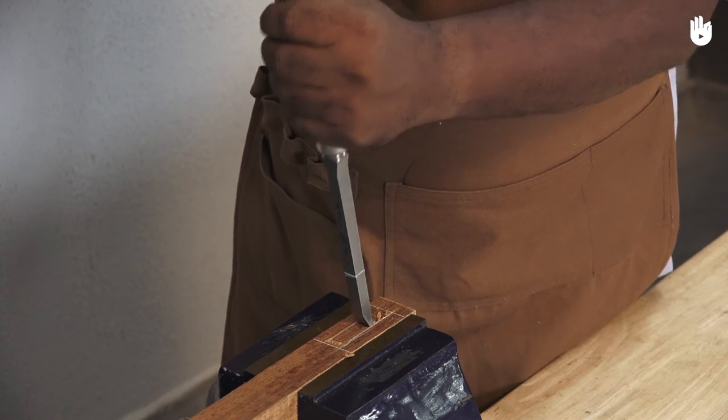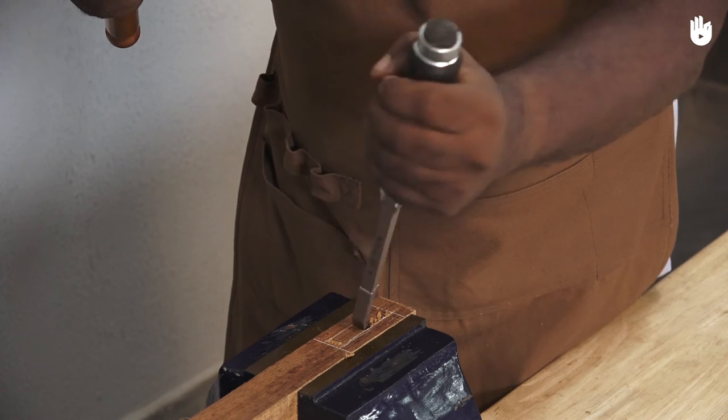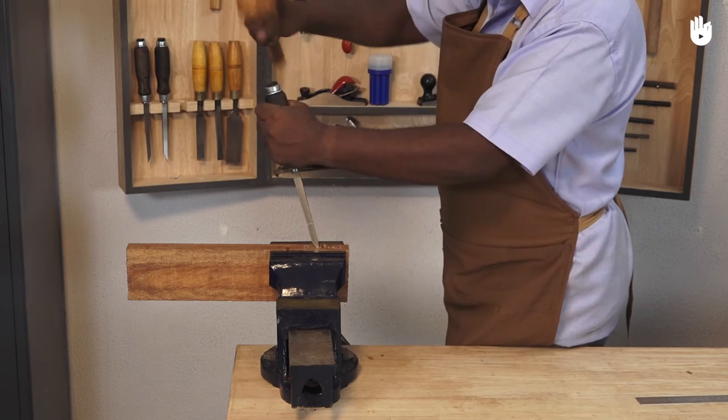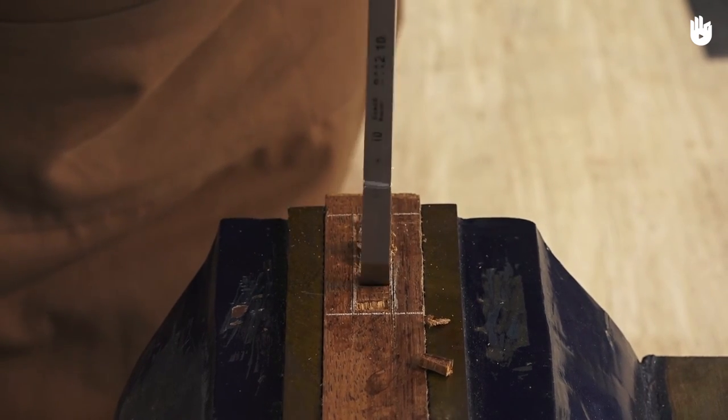Place the tip of the mortise chisel on the waste wood less than a quarter of an inch from the line marking one end of the mortise. Hold the bevel away from the mortise walls as the cut tends to travel in the direction of the bevel.